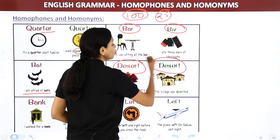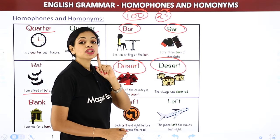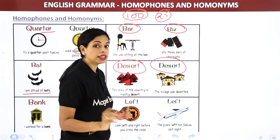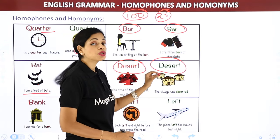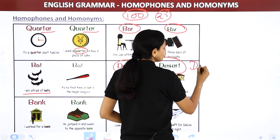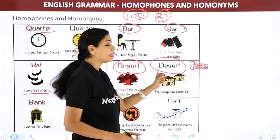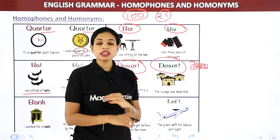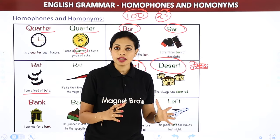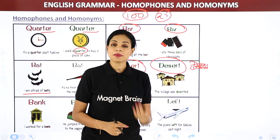Next — 'desert' and 'desert.' Spelling is the same but pronunciation is different. One is 'desert' (registan — a sandy place), and one is 'deserted' (sunsan — abandoned, empty). A deserted area means no one lives there; it's completely empty and quiet. These are homographs.